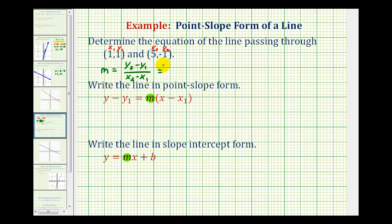Using the slope formula, Y sub 2 minus Y sub 1 would be negative 1 minus 1 all over X sub 2 minus X sub 1. That would be 5 minus 1. So we have negative 2 all over 4, which simplifies to negative 1 half.